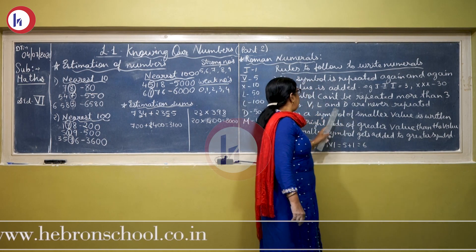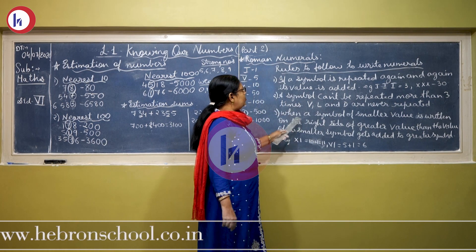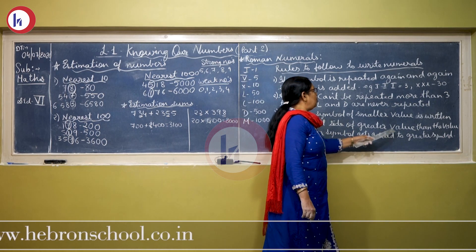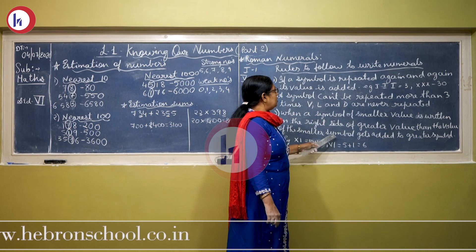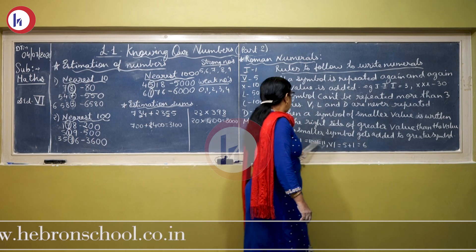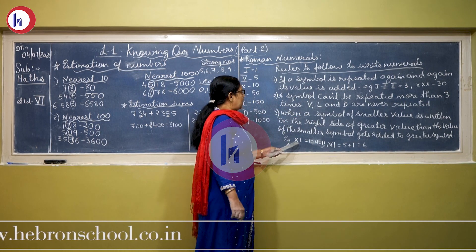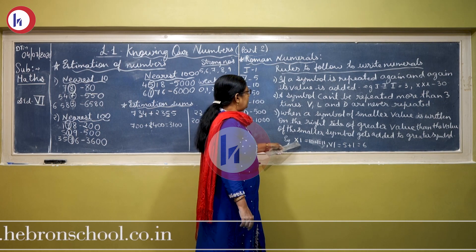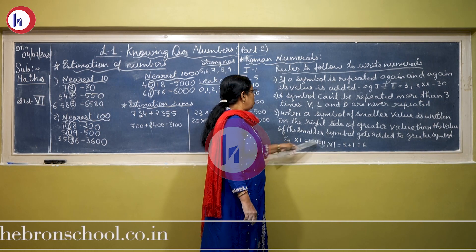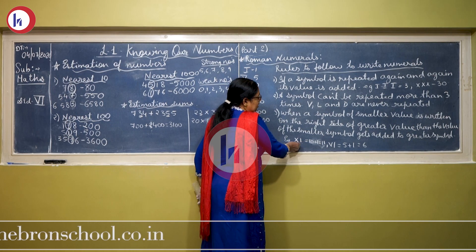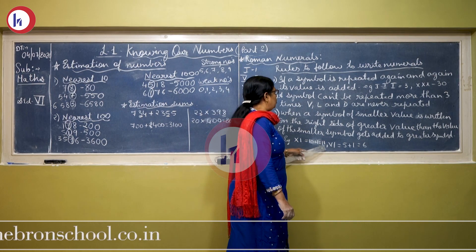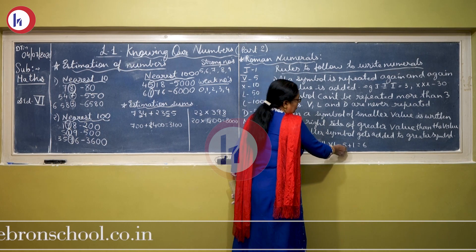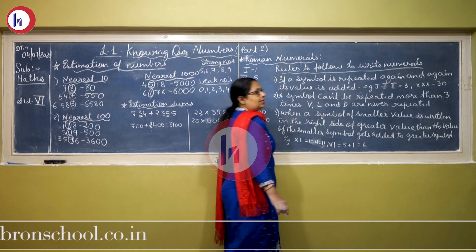When a symbol of a smaller value is written on the right side of the greater value, then the value of the smaller symbol gets added to the greater value. For example, XI: X stands for 10 and I is 1, so 10 plus 1 is 11. Same way VI: 5 plus 1 is equal to 6.